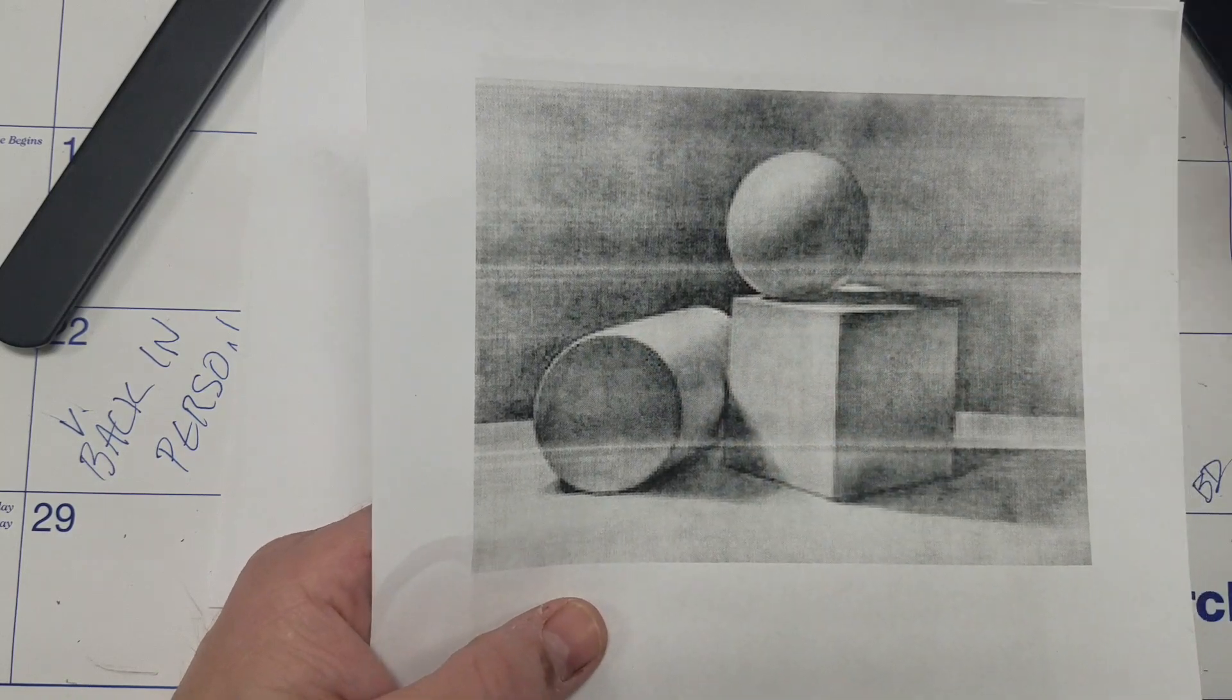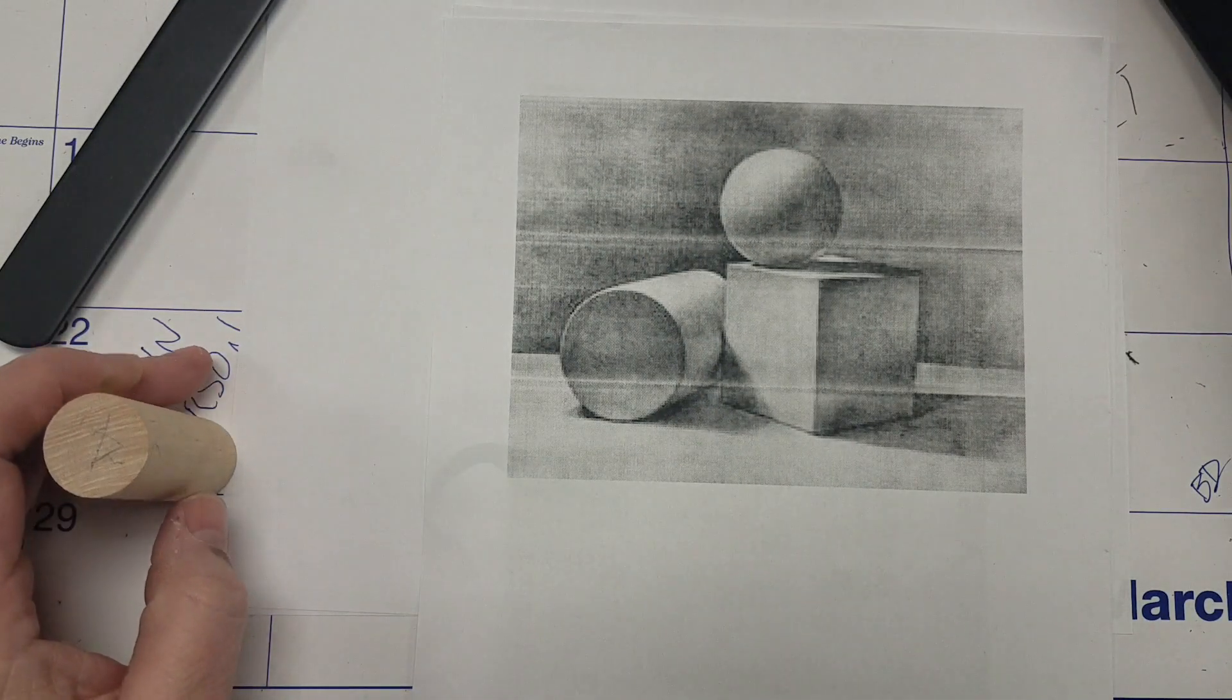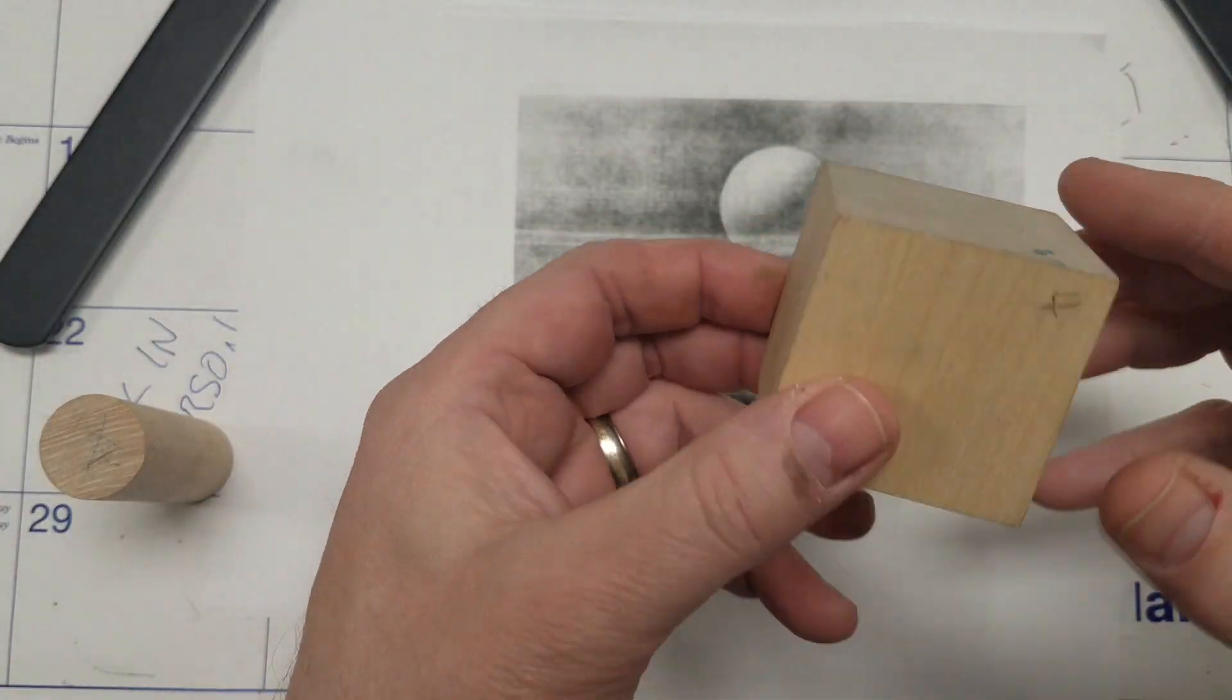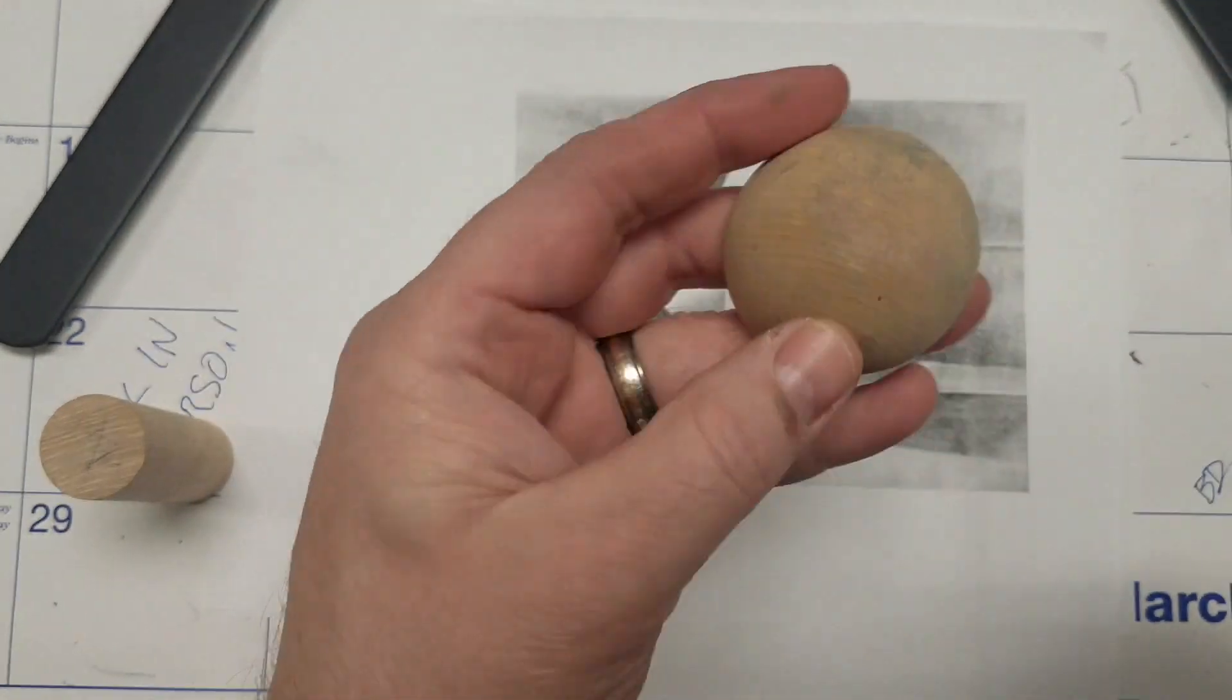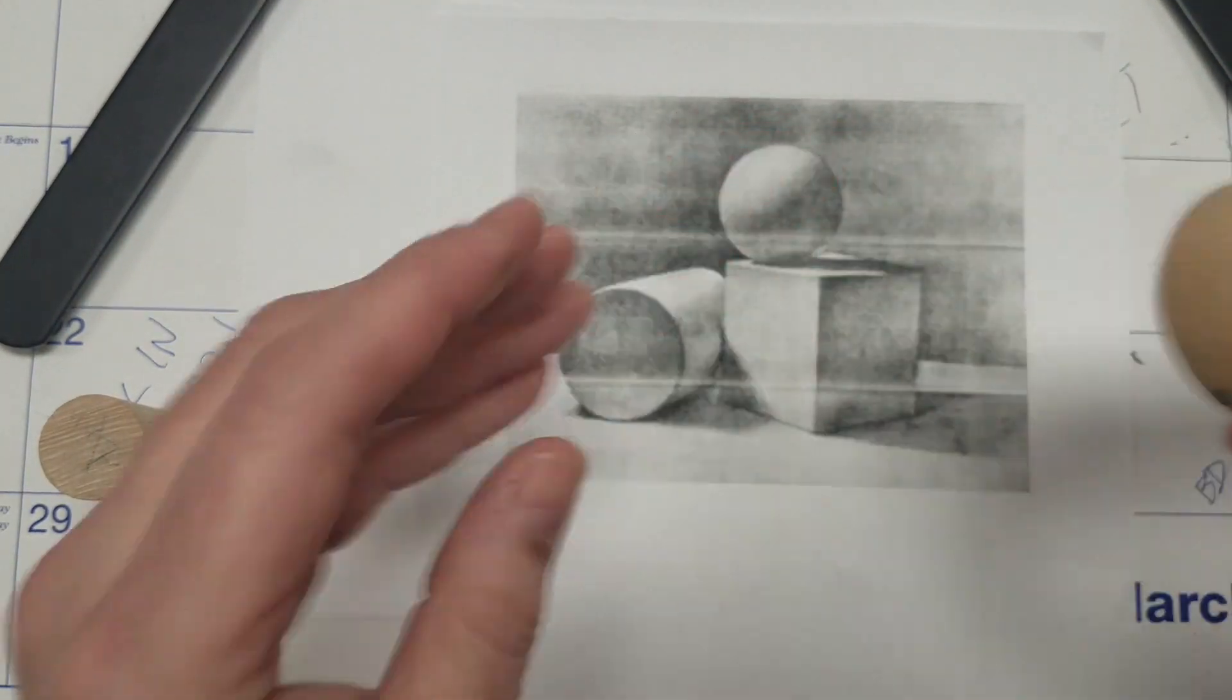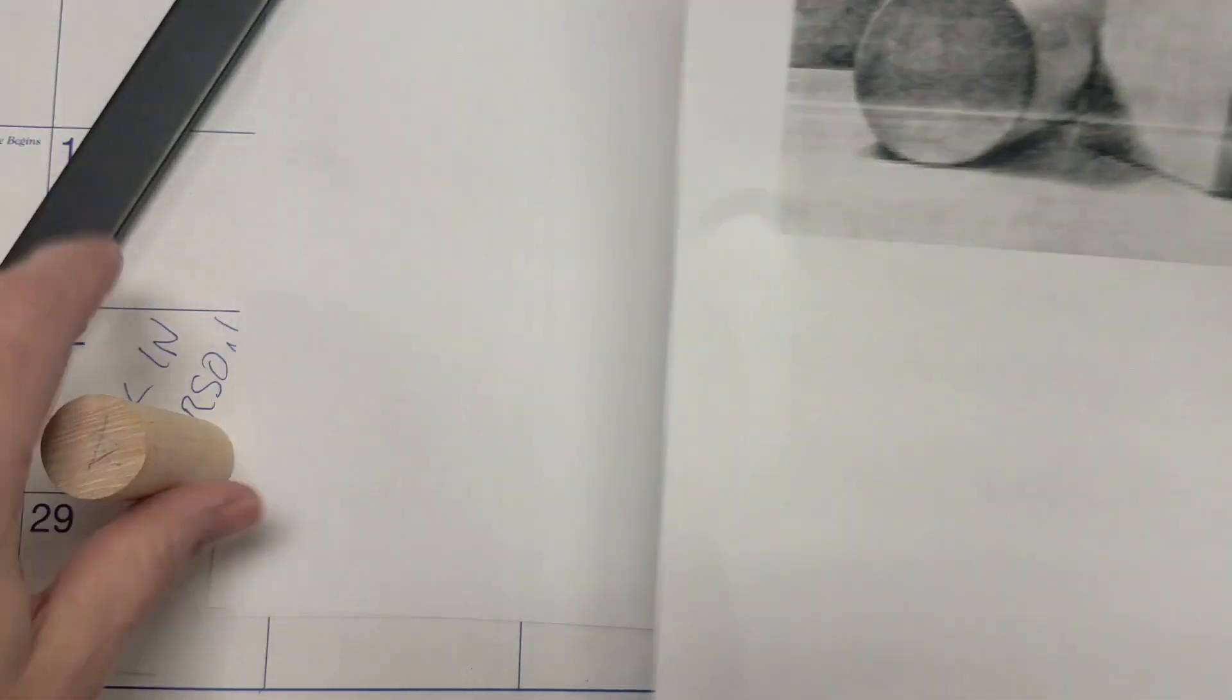So, we're going to take the cylinder, which is like this, and we're going to take the cube, like this. We're going to take the ball, which is not a ball, it's a half ball, but the sphere, like that. We're going to draw those here. So, we're going to use this as a reference, and this is online, if you're looking online.